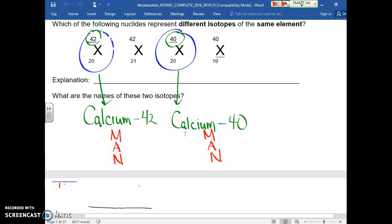You can approach that with MAN. Mass minus atomic number tells you the number of neutrons. So in the case of calcium-42, 42 minus 20 is 22 neutrons. In the case of the second, 40 minus 20 is 20 neutrons.